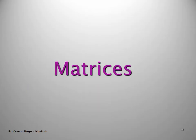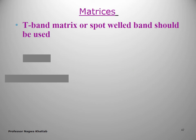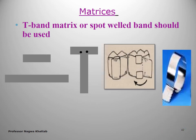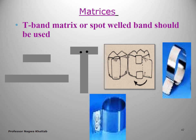For Class 2 cavity preparation, use a T-band or spot-welded band for primary molars when matricing. For the T-band, you cut a piece of stainless steel band, place the pieces over each other in a T-shape, then weld them together. The T-band for the primary molar is preferred to accommodate the bulbous shape of the primary molar and provides better control than the Ivory or Tofflemire matrix holder.